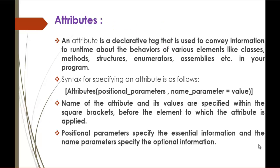What is an Attribute? An Attribute is a declarative tag that is used to convey information to runtime — not at compile time, keep that in mind — at runtime, to tell about the behaviors of various elements like classes, methods, structures, assemblies, etc. in our program. Simply put, an Attribute is like a mediator which conveys information about the various behaviors of elements like classes, methods, structures, enums, assemblies, etc. at runtime.